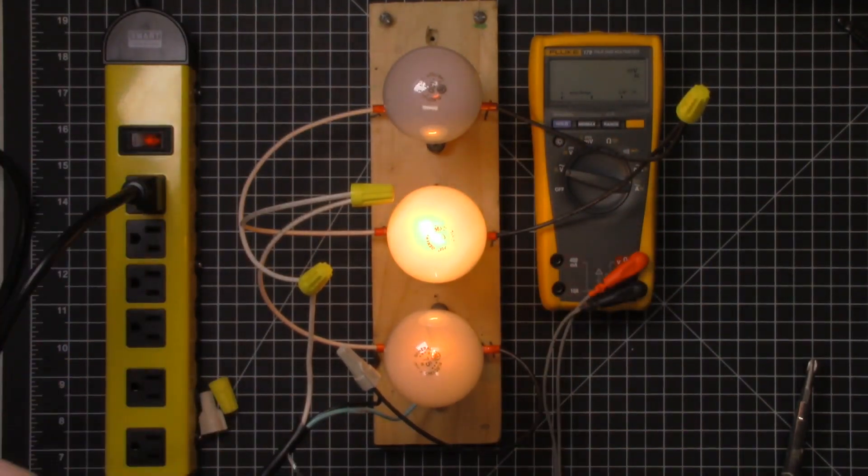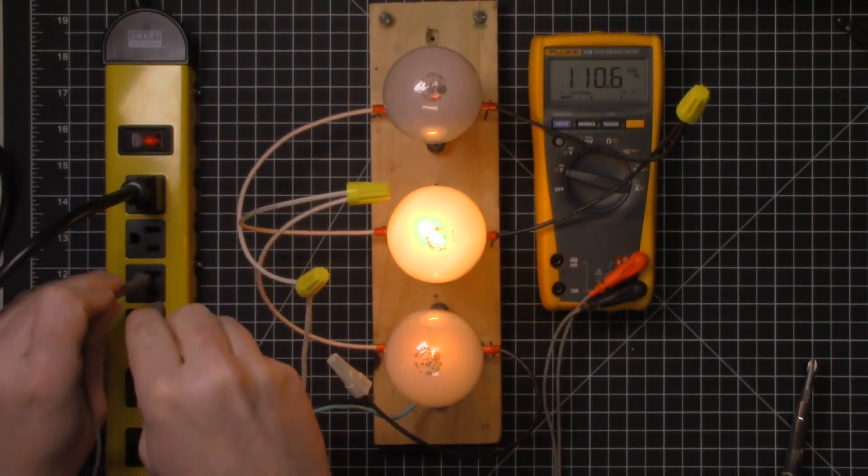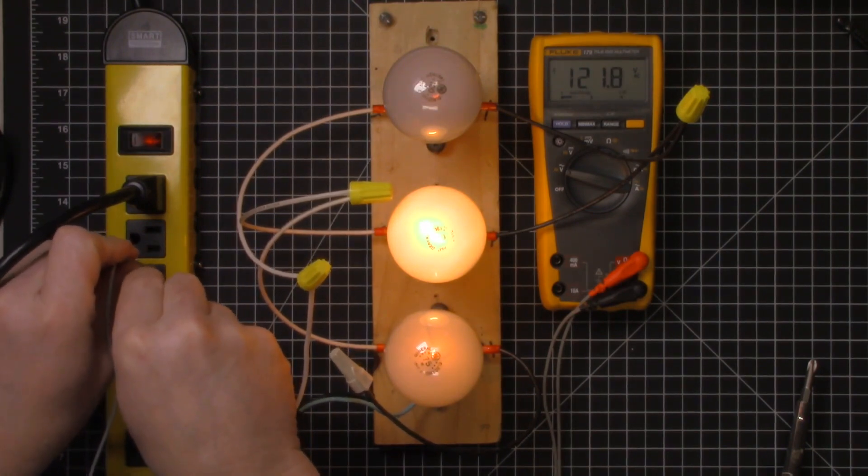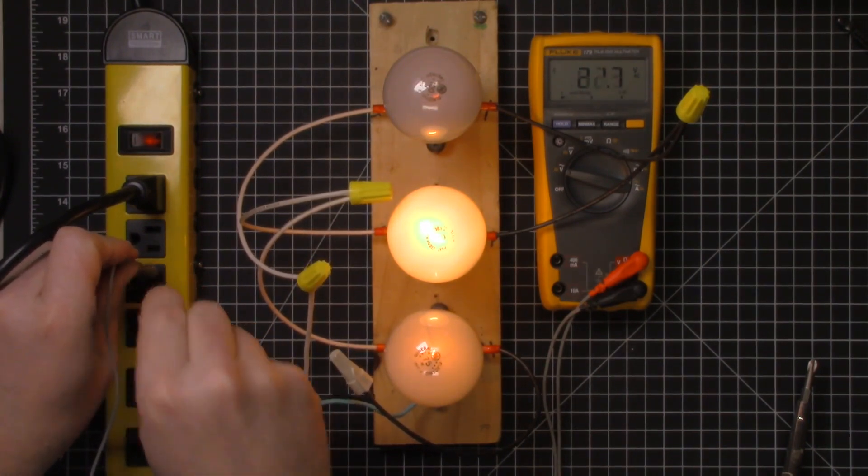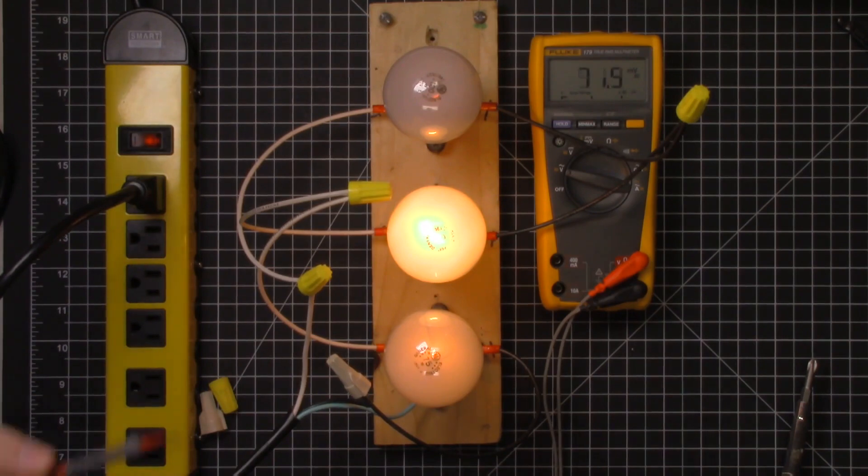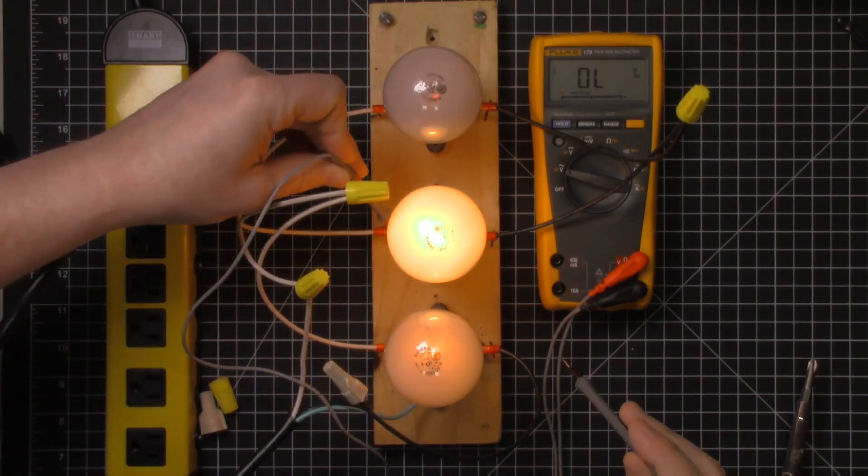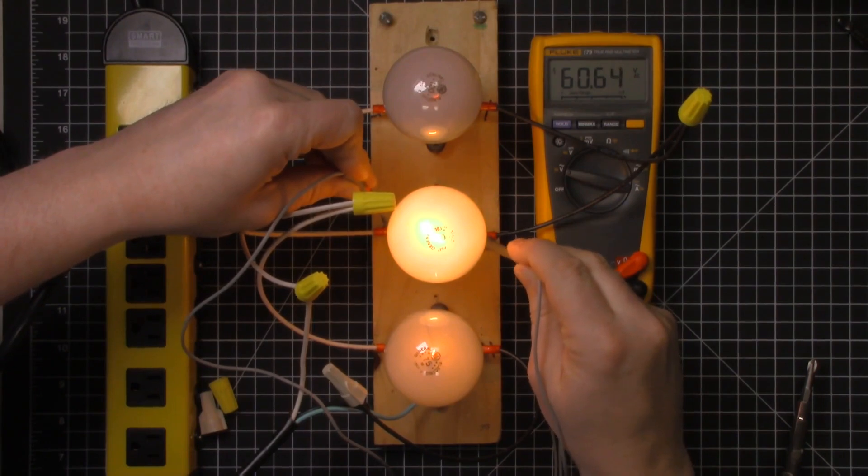And the total output of this, you know, coming from our voltage source, this should be 120 volts, measuring from the power outlet. So coming in, we have 120. This other next light bulb is at 60.